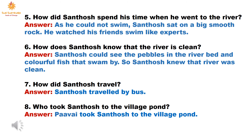Fifth question: How did Santosh spend his time when he went to the river? Answer: As he could not swim, Santosh sat on a big smooth rock and watched his friends swim like experts.